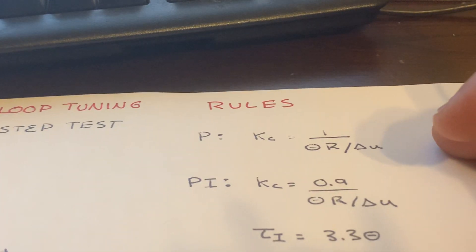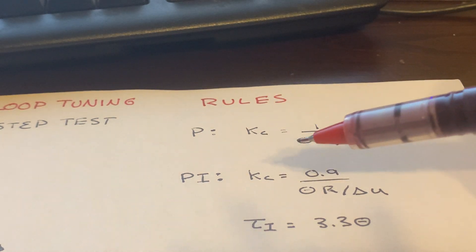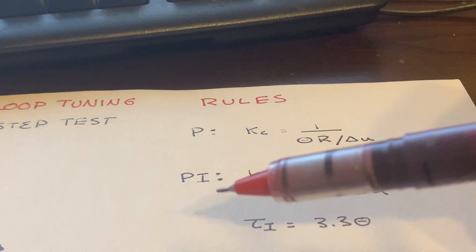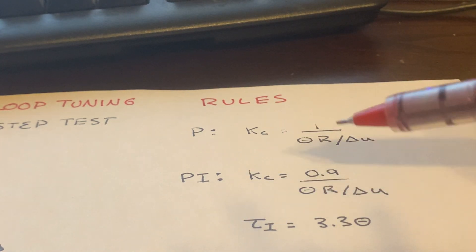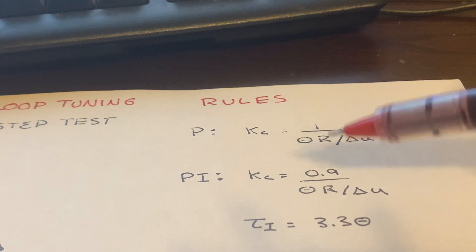So the rules are relatively simple. For P-only control, the gain is just 1 over theta r divided by delta u, which is the magnitude of the step input. This is the corrected slope, or you can almost think of this as almost like a gain for the response.